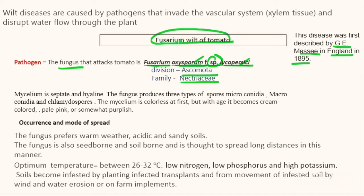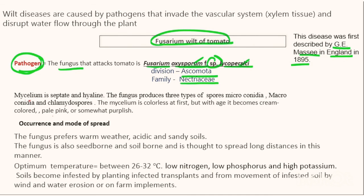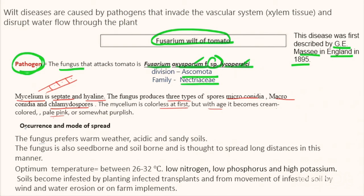Before discussing what the disease is about and how it is caused, let us first know what the pathogen looks like so we can identify it in the lab. When scientists isolated the fungi from diseased plants, they found the fungi is of mycelial type, made up of hyphal networks. Each hyphae was found to be multicellular and septate — cells separated by walls — and hyaline, appearing colorless or very lightly colored. The fungus produces three types of spores: microconidia, macroconidia, and chlamydospores. The mycelium is colorless at first but with age becomes green, pale pink, or somewhat purplish.